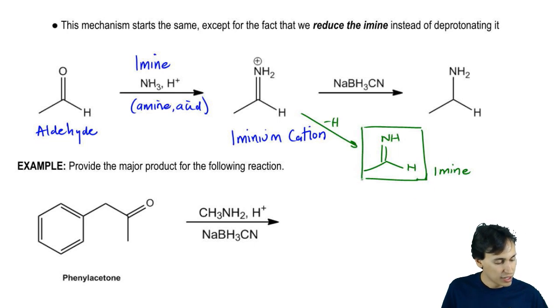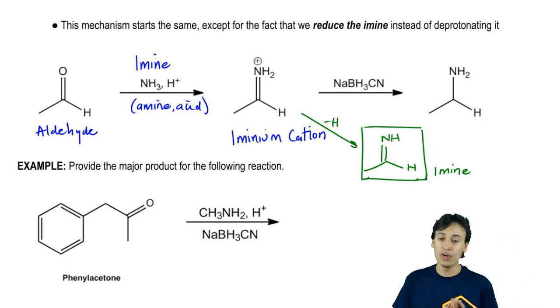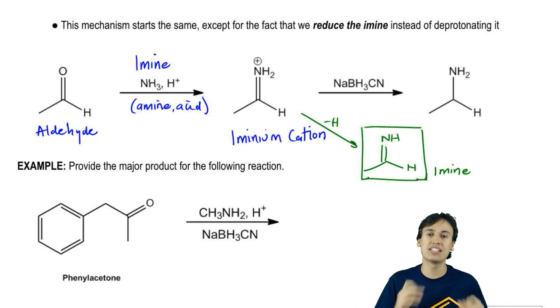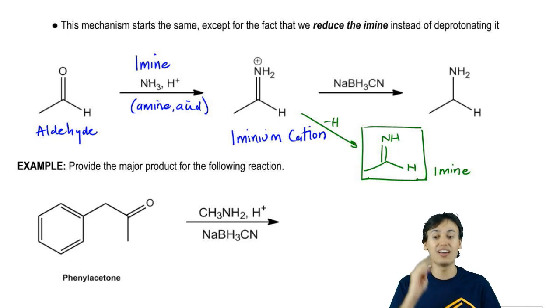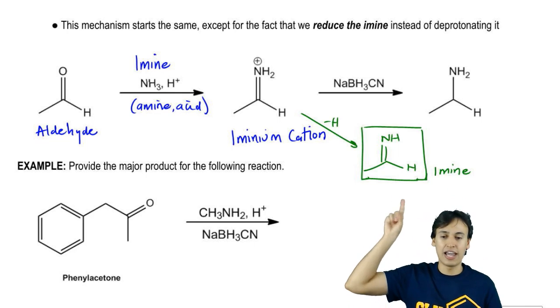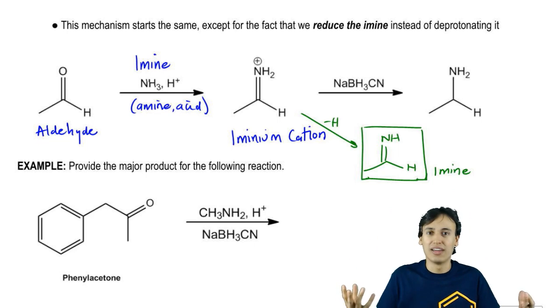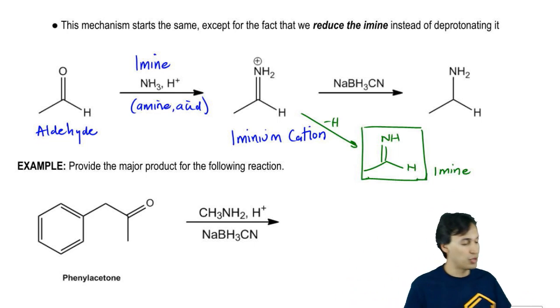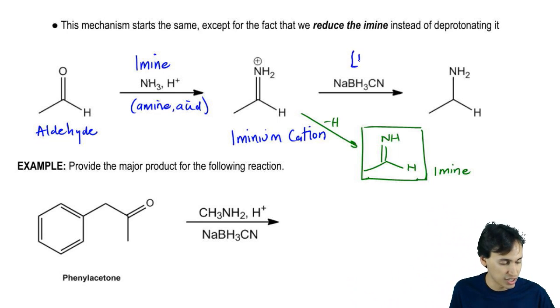But we're not going to do that because in this reaction, we want to get rid of this double bond altogether. We don't want the double bond there anymore because the double bond is an imine, but we want an amine. We want one that has just a single bond. How can we add hydrogen to that double bond to make sure that it goes away, basically to reduce it? We can use my reducing agent.